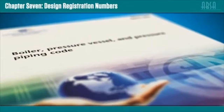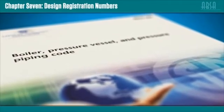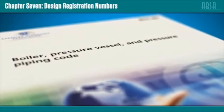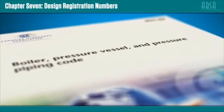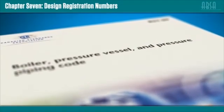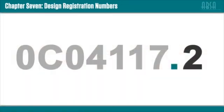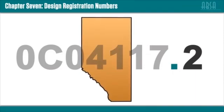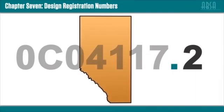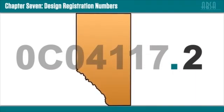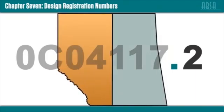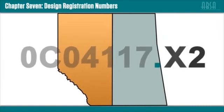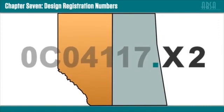A list of fitting category letters established by CSA B51 can be viewed in the course materials. The number 2 after the decimal point is Alberta's designator. If a piece of equipment is already registered by another province, that province's designator would appear between the decimal point and the Alberta designator.